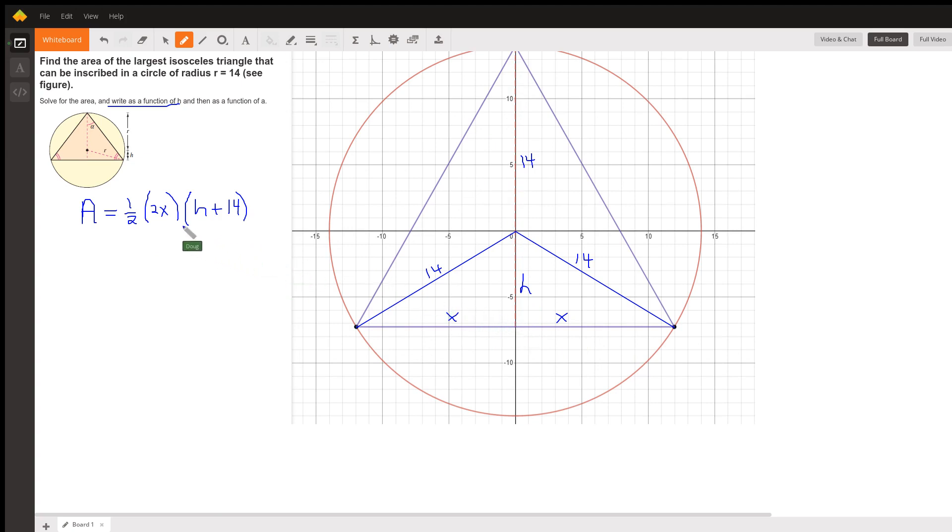The problem is we want this in terms of H, and this little triangle over here, which I'll call triangle one, it has a relationship X squared plus H squared equals 14. So, X squared plus H squared equals 14 squared, I should say, 196.